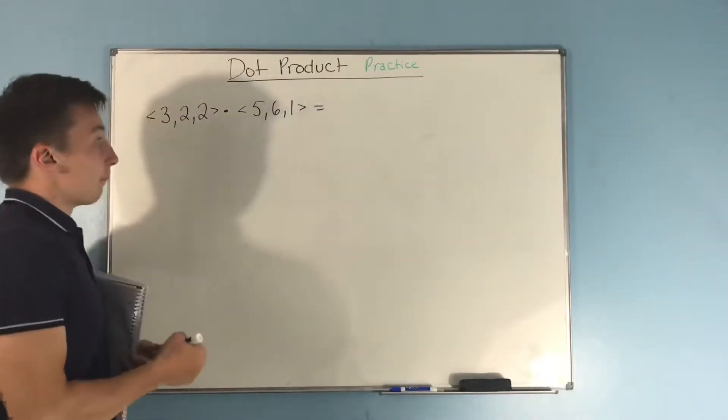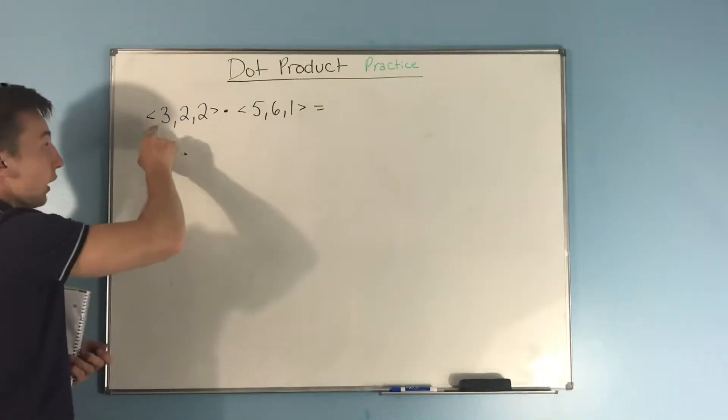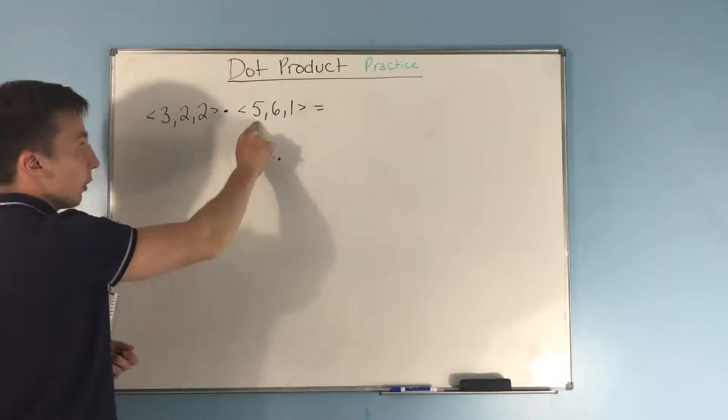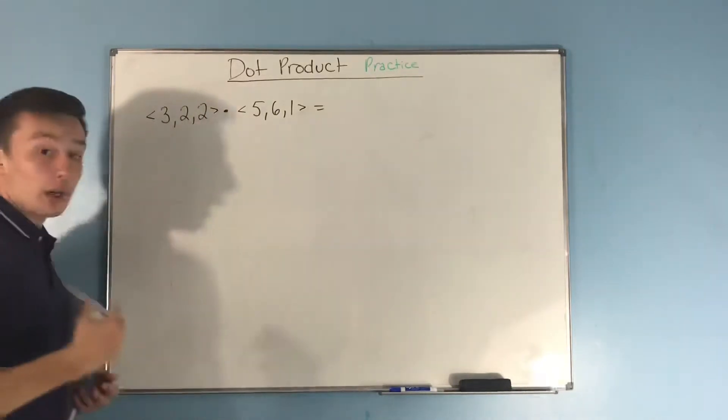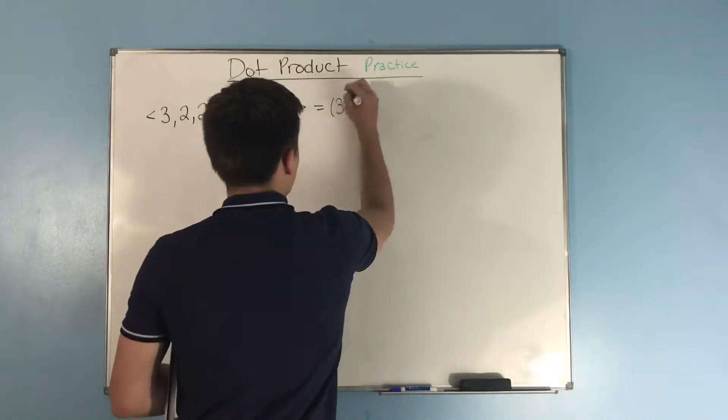All right, so how do we find the dot product? Well, remember, we just take our first set of components. The 3 and the 5, we're going to multiply them together. So we have 3 times 5.